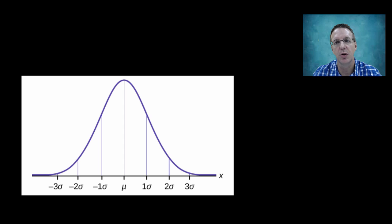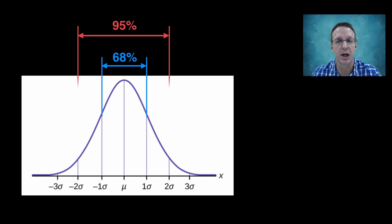it has been shown, and with the greatest respect to my statistician colleagues, I really don't know how this works and I don't really care that much, but it has been shown that 68% of the data points will fall within plus or minus one standard deviation from the mean, and a full 95% will fall within plus or minus two standard deviations from the mean.